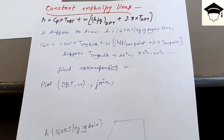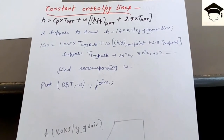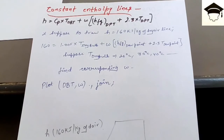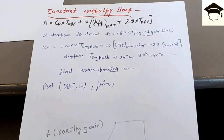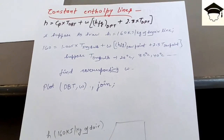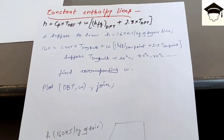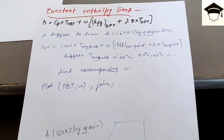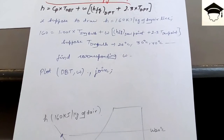If you have found this video helpful, please like, comment, and share the video. If you have not yet subscribed, please subscribe to my channel by pressing the subscribe button below. All the links are given in the description — especially if you want to see how to draw constant relative humidity lines, constant specific volume lines, and saturation lines, you can click the links in the description and watch those videos.